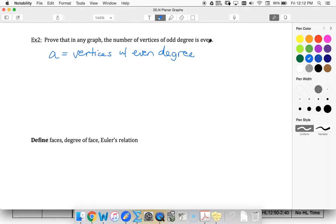And let's assume that we have B vertices with odd degree. Well, we know that the degree of a vertex is how many edges come out of it.